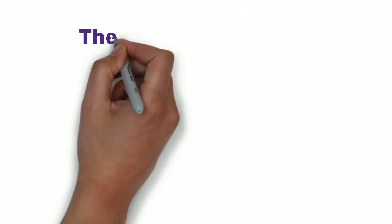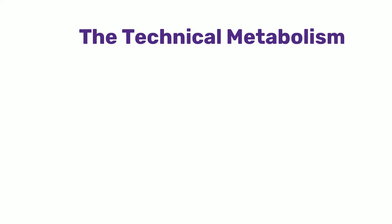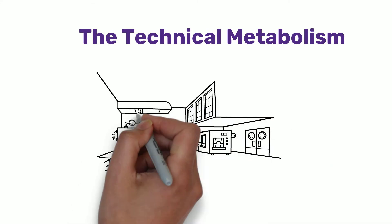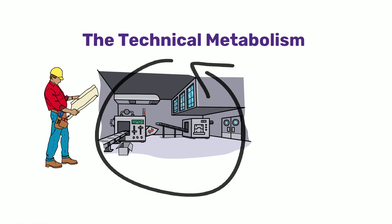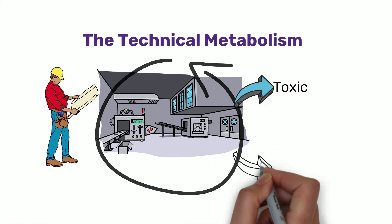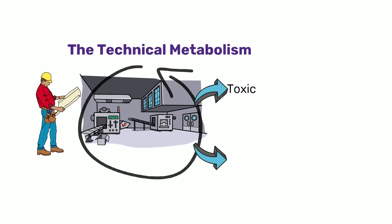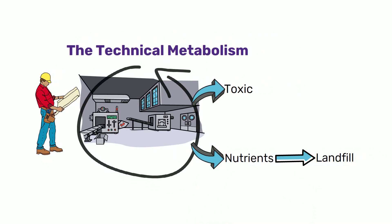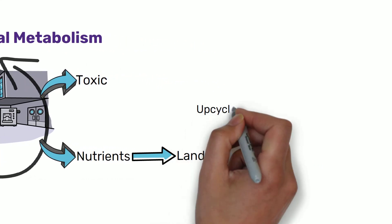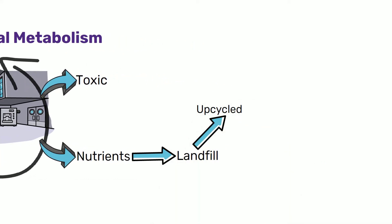The Technical Metabolism. A technical nutrient is a material or product that is designed to go back into the industrial metabolism from which it came. Some of them are toxic which are wasted, but others are valuable nutrients for industry that end up in a landfill. Isolating them from biological nutrients allows them to be upcycled rather than recycled to retain their high quality in a closed-loop industrial cycle.